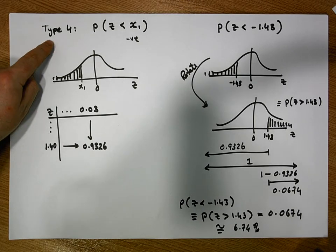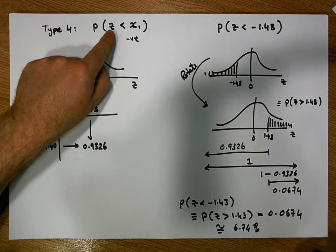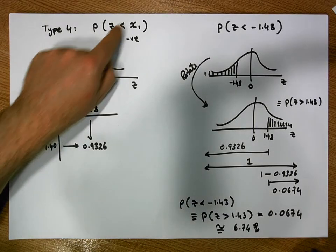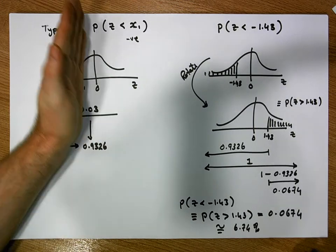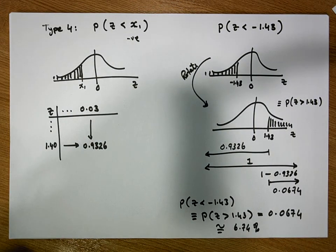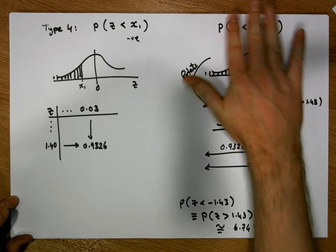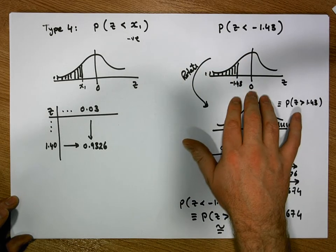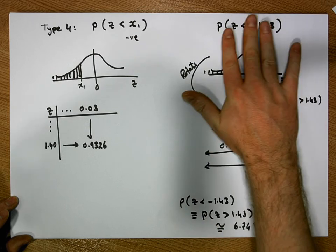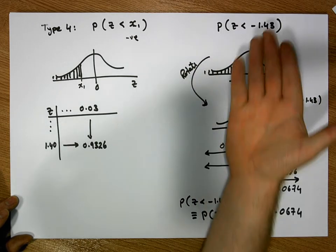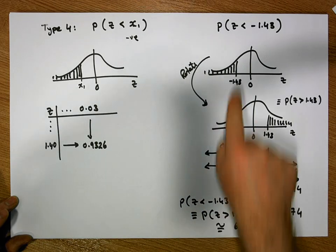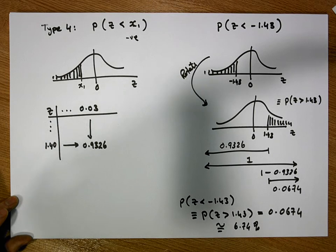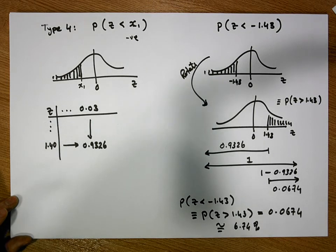That's all done with respect to Type 4 probabilities. These are probabilities where we need to calculate the probability of a z-score being less than a particular value where that value is negative — in other words, we calculate a left-hand tail area. To do that, we represent it with respect to the standard normal distribution and zero, then rotate or flip the curve to give us an equivalent probability: the left tail area becomes a right tail area, and we calculate it as we would previously. Thank you very much for your time — I'm Jonathan Lambert from the Mathematics Development and Support Service at the National College of Ireland.